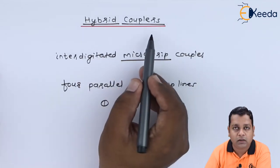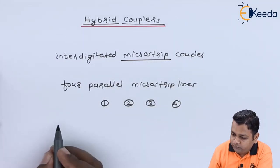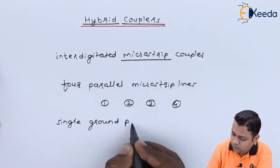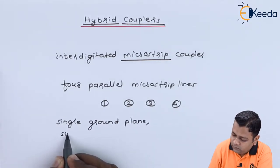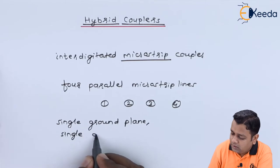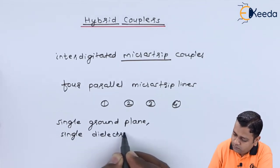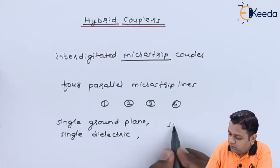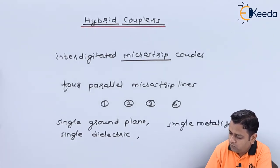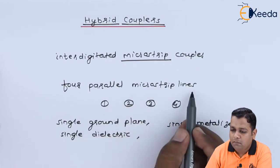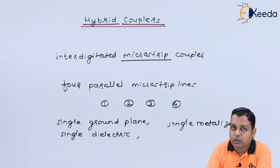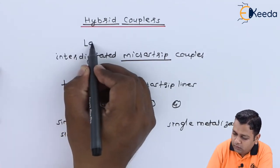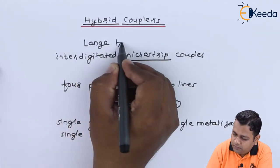For the hybrid couplers it is observed that it has a single ground plane, a single dielectric substrate, and a single layer of metallization, but four parallel microstrip lines. Most of the time such a hybrid coupler is also referred to by the name Lange hybrid coupler.